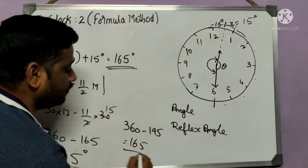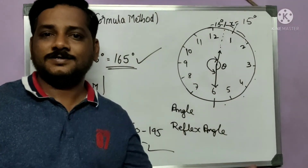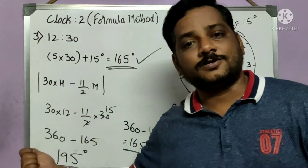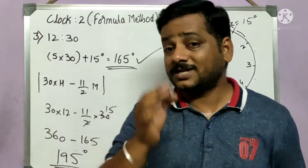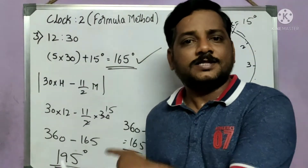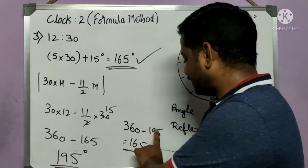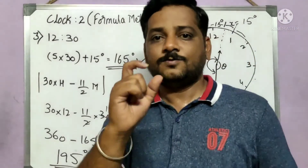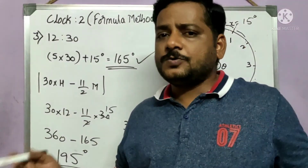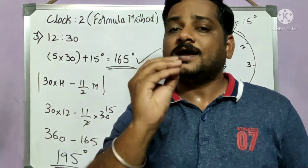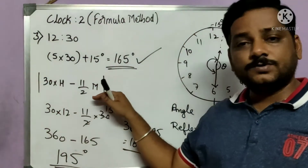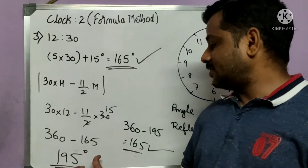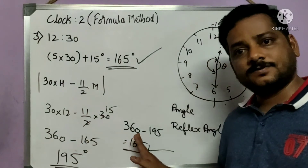To find the actual angle when the formula gives more than 180: apply 360 minus that answer. So 360 − 195 = 165, which matches the traditional method answer. So both methods agree. The traditional method always gives the direct angle; the formula method may give the reflex angle, so if the result exceeds 180, subtract from 360 to get the actual angle.